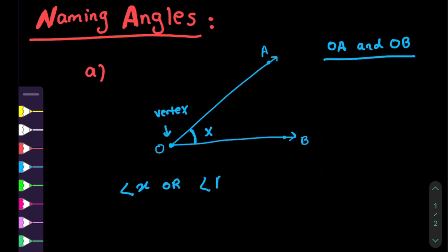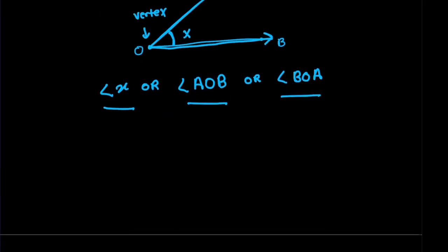We can name the angle as X, or we can also call it angle AOB. Is that true? A from the top, AOB. Is there anything else that we can call this angle? Yes, we can also call this angle BOA. So there are three ways of calling this angle: angle X, angle AOB, angle BOA.